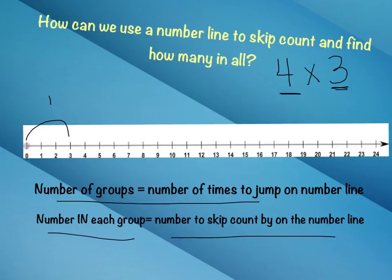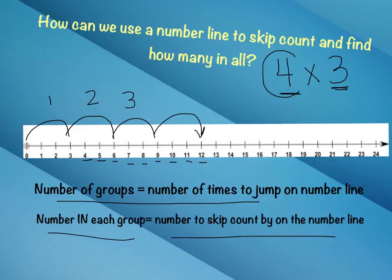So here's three: one, two, three — jump again. One, two, three — jump again. How many times have I jumped so far? I've only jumped three times. I've got to jump four times. So let's go one more time: one, two, three — and jump one last time. I've now jumped four times, and in each jump I jumped three, or I skip counted by threes. So four times three is equal to 12. That gives us that product. You can use a number line to help you skip count and figure out a multiplication problem. Now we've learned another way to do it.